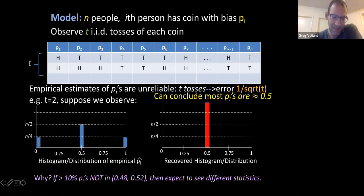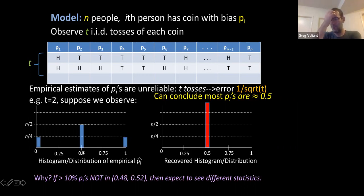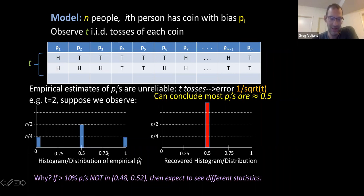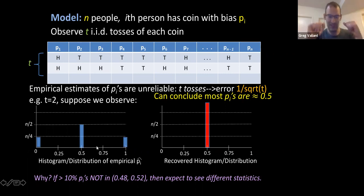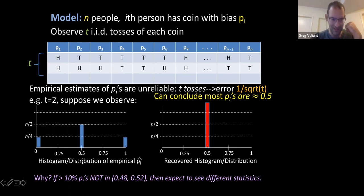Why is this? If all of the p_i's were exactly one-half, we would expect to see exactly this empirical histogram. It's not too hard to work out that if there was significant variance in the underlying set of p_i's, you would either see an empirical distribution where the mean wasn't close to one-half, or if the mean was one-half you'd expect to see even more variance than what we observe. So the observed empirical variance is actually the smallest variance realizable in this setting, and based on this we can robustly denoise and reach this conclusion.